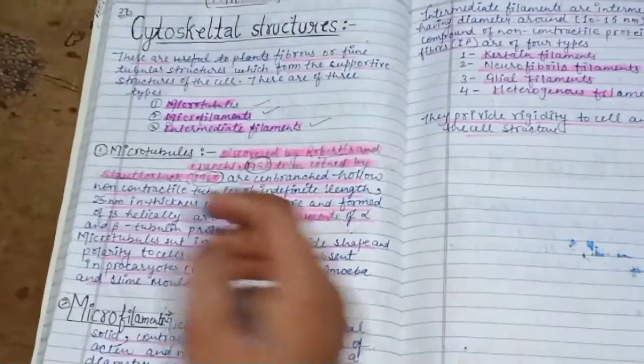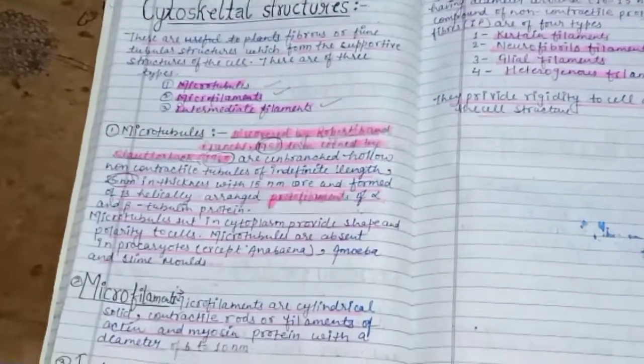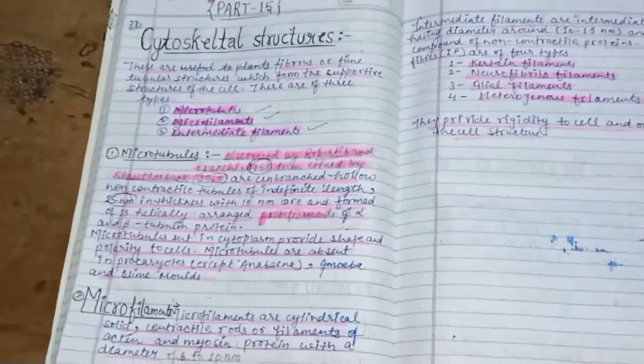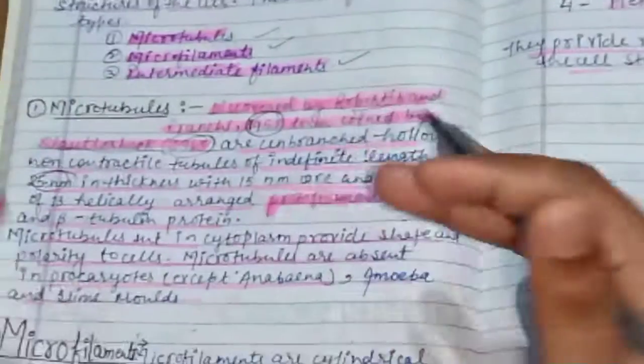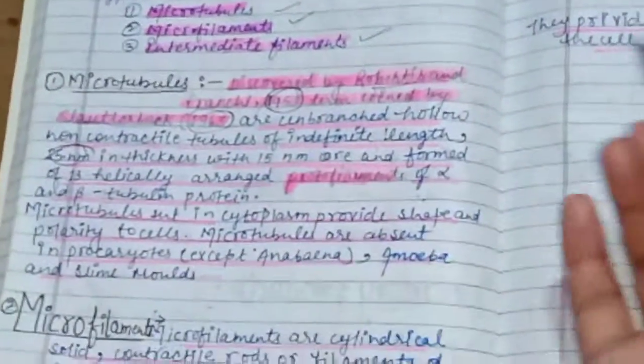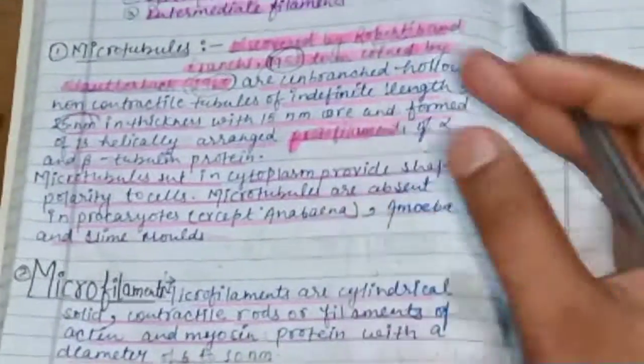They are helically arranged in two protofilaments, and these protofilaments are called alpha and beta tubulin proteins.